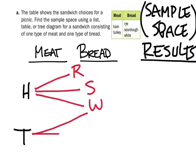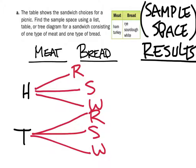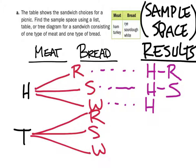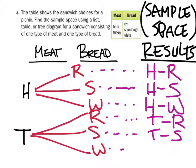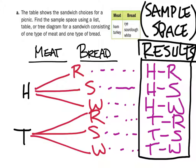If I choose turkey, the same ones apply — you've got rye, sourdough, and wheat. This gives us pretty easy results: ham and rye, ham and sourdough, ham and white. And down here, turkey and rye, turkey and sourdough, turkey on white. Six different choices there. And this list — we can just circle this and call it our answer.